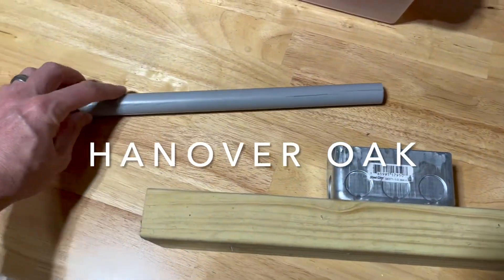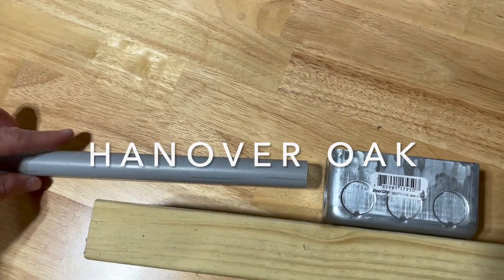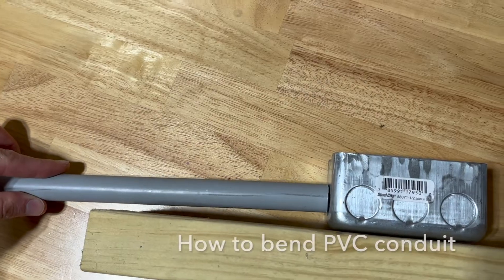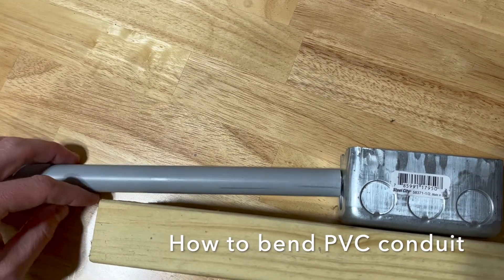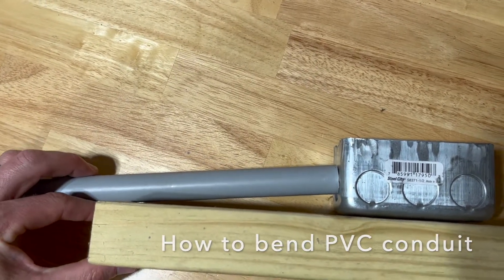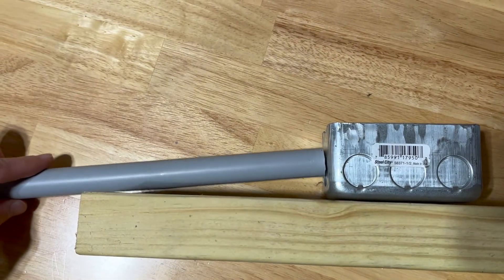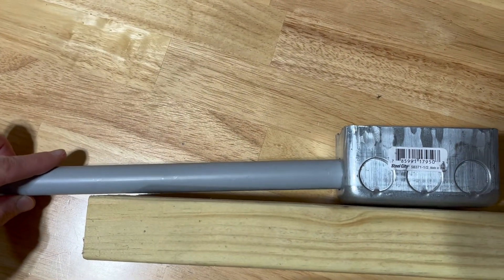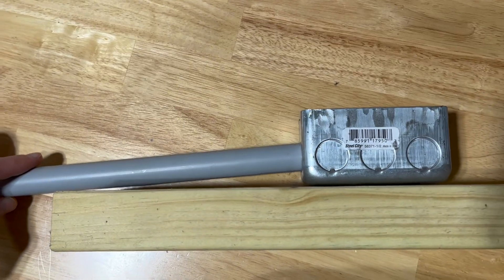Whenever you're running a conduit up a wall to an electrical box, I see a lot of people just run it straight in like this, kind of at an angle. Let's just picture this piece of wood being your wall, and it just doesn't look finished.